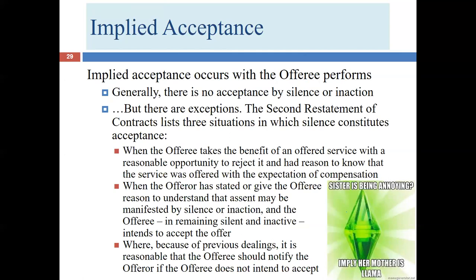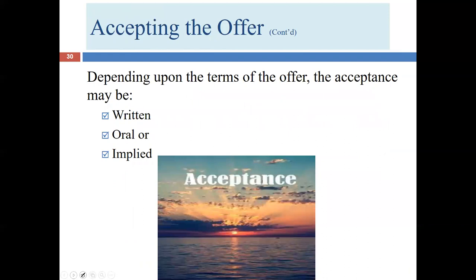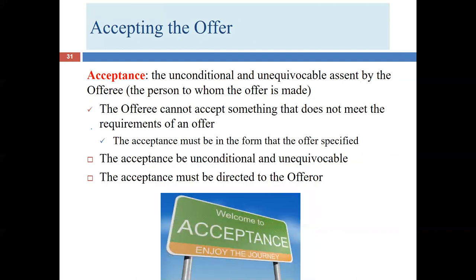So given previous dealings, it is sometimes possible that silence or inaction can cause acceptance. We can have acceptance by implication. We've talked about the three ways acceptance can happen: in writing, in oral format, or implied. We need to look to the terms of the offer to know how those methods work. We have now completed our first requirement for acceptance — the offeree cannot accept something that does not meet the exact requirements of the offer.